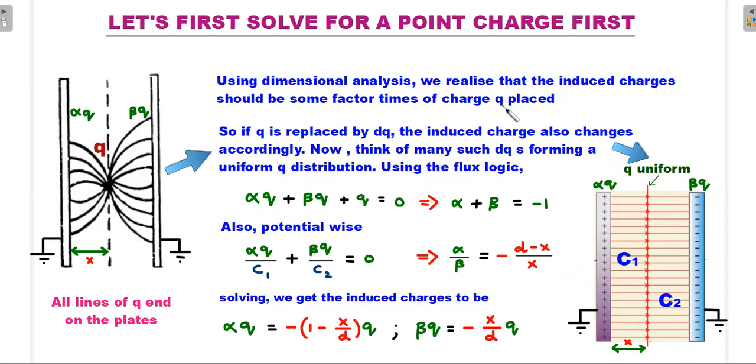Using dimensional analysis, we realize that the induced charges should be some factor times the charge q placed. What I mean to say here is, if q is the only point charge placed in between and the field lines start going and ending on these two plates which are grounded, there should be alpha times q and beta times q, where alpha and beta are some constants depending on the ratio of this x versus d. Because it has to be a charge versus charge condition, dimensional analysis should tell you that it should be a factor times, and our job is to find this factor.